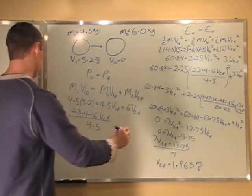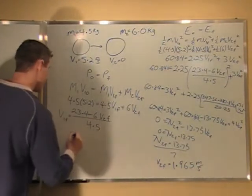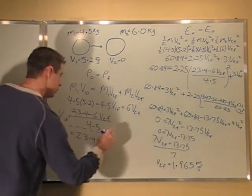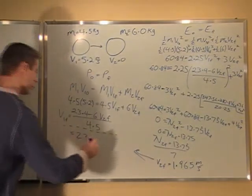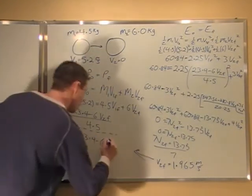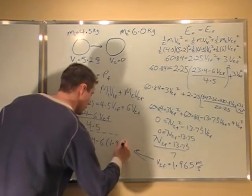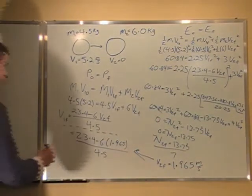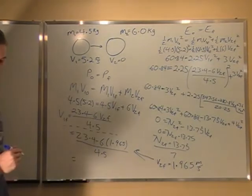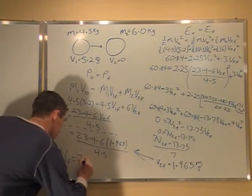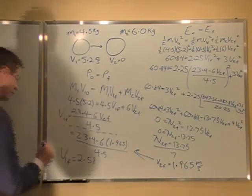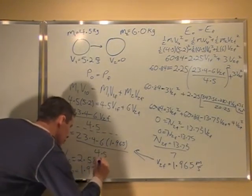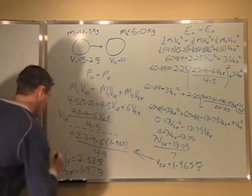And all we have to do now is plug this into here to get our V1 final. So we put in 23.4. I'll just put a little dotted line so that we know we can pull this into here. So we have 23.4 minus 6 times V2 F of 1.965. And then we divide by 4.5. Plug goes into our calculator. It gives us a V1 final of 2.58. And after rounding V2 final, it's equal to 1.97 meters per second. Final answer.